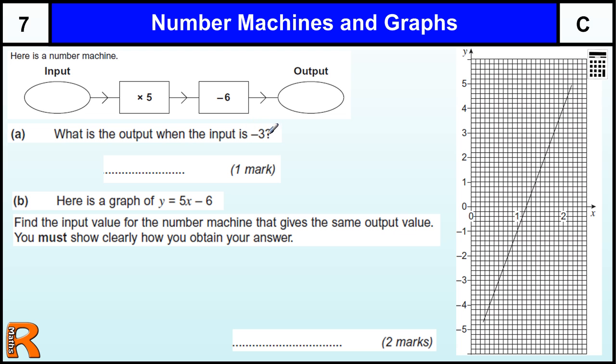So first question, what is the output when the input is minus 3? So we're putting in minus 3, we times by 5 we get minus 15, we take away 6 we get minus 21 for one mark.